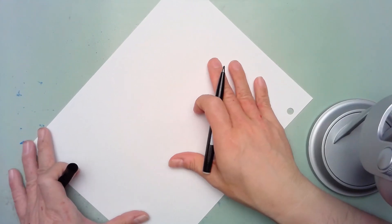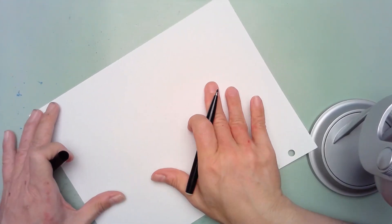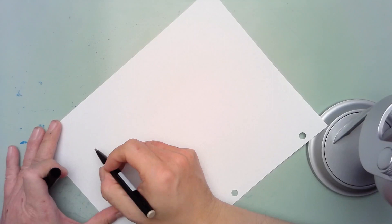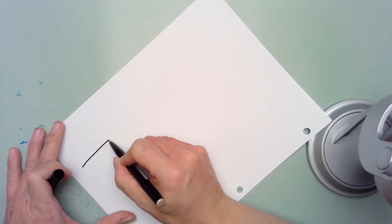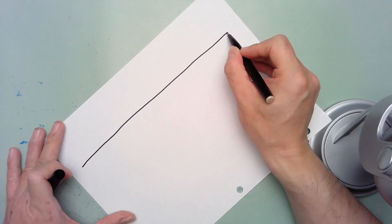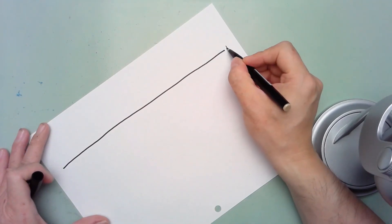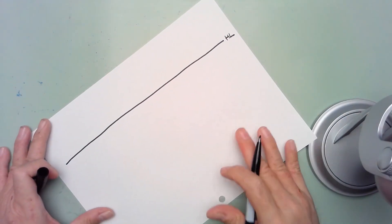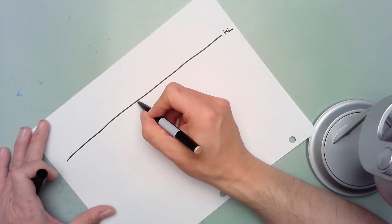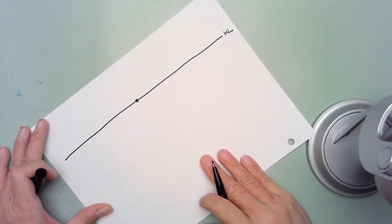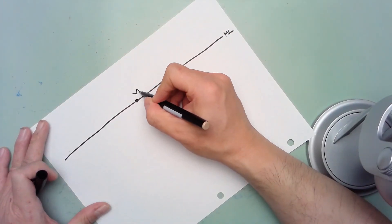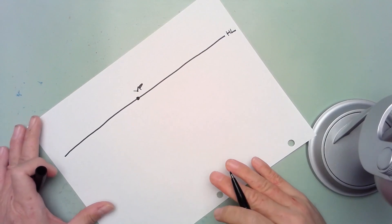With any perspective drawing you will always start out with a horizon line. So we'll start off with a horizon line and I'll mark it as HL here. From here on out you will always have a vanishing point. This is the point at which all parallel lines on your object will converge to.